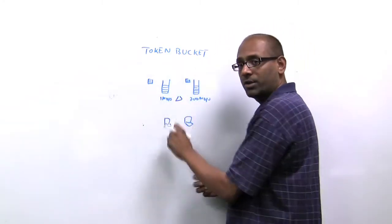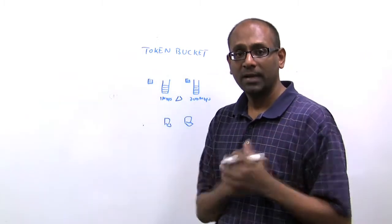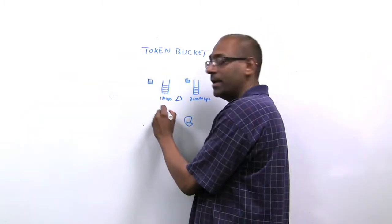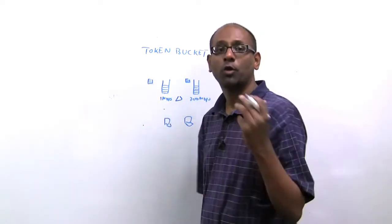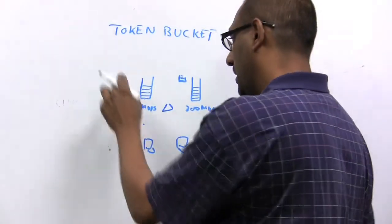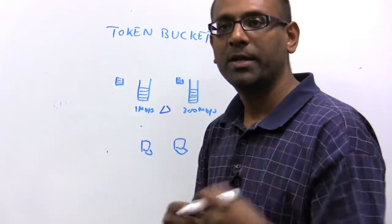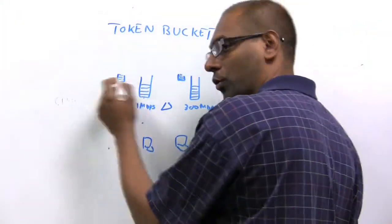You can only transmit a frame if you have enough time credits in your token bucket. So each station is being given a number of credits on a periodic basis, or tokens. And in order to transmit a frame, you need to have that many tokens.